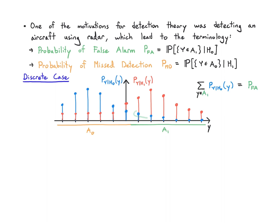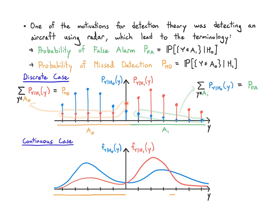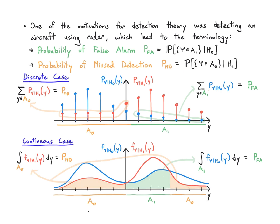To get the probability of false alarm, I find all the blue points that fall into the green a1 region and add up their probabilities. Those are all the h0 points I'm going to make mistakes on, because whenever they happen I'm going to still declare that h1 occurred. And the missed detection is all the red points that fall into the a0 region. In the continuous case I get a very similar picture, integrating where I did not decide h0, and similarly integrating over a0 for mistakes on the red distribution.